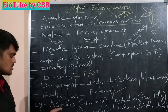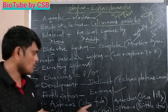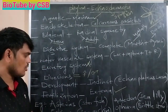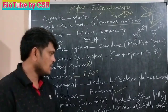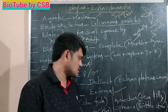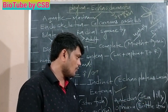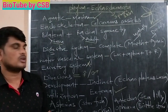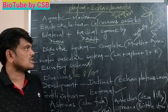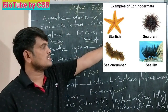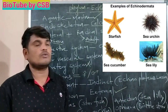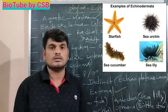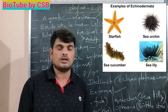Best examples: Asterias, commonly called starfish; Echinus, commonly called sea urchin; Antedon, commonly called sea lily; Ophiura, commonly called brittle star. You can observe the diagram on screen. Starfish is a suitable example for phylum Echinodermata. Thank you very much.